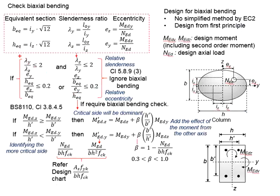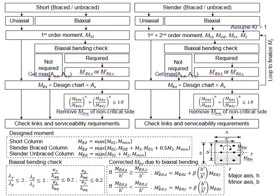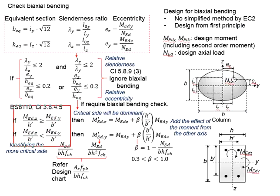Now, in the case that these four items are not fulfilled, that means the biaxial bending cannot be ignored. As a result, the calculation step will go this route. In this case, knowing that biaxial bending is required, your next step will be to generate a new M_Ed, taking into account the influence of the other axis. In order to do that, you will need to determine which side will be more critical. This is determined by comparing the ratio of the moment against the effective depth of both axes. Whichever gives you the greater value will be the critical side.